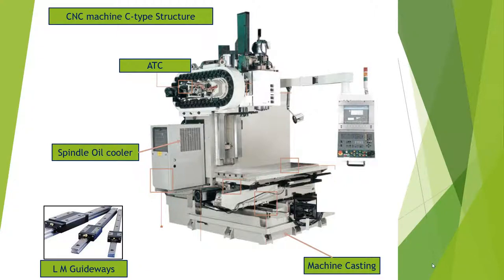The ATC is used to store tools in ATC pockets; it is used in automation of job machining. I will make a detailed video on ATC in a different presentation. The spindle cooler is used to cool the spindle during running — when we use the spindle for a long time at high RPM, it gets heated, which affects the spindle and surface quality. So we use a spindle chiller. For LM guideways, I will make a separate video because there are different types of LM guideways available; it is also a main part of the machine.